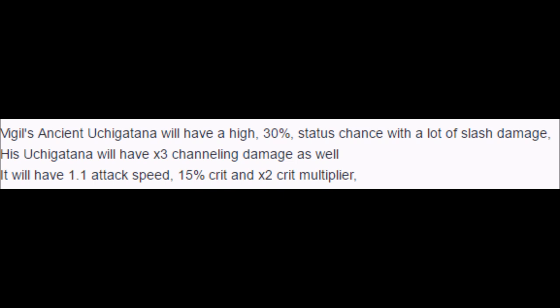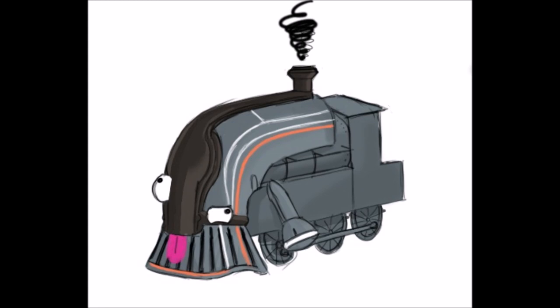Uchigatana deals 250 slash damage and comes with its own Vigilant Strike stance. Uchigatana also has a 30% status chance and a 1.1 attack speed, 15% crit chance, 2x crit multiplier, and 3x channeling damage multiplier. Yeah. Needless to say, Uchigatana might need some changes to make it a bit fairer as a melee weapon. When Ancient Uchigatana is active, in addition to 25% additional power efficiency, Vigil's first 3 abilities change to different powers.